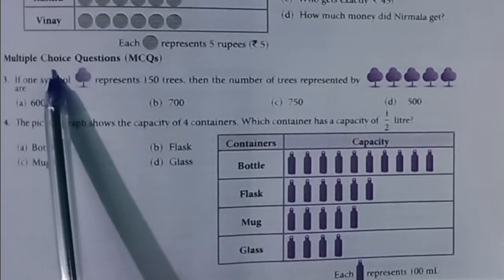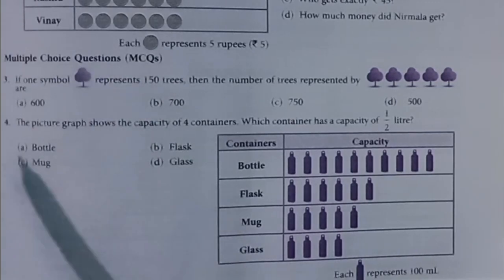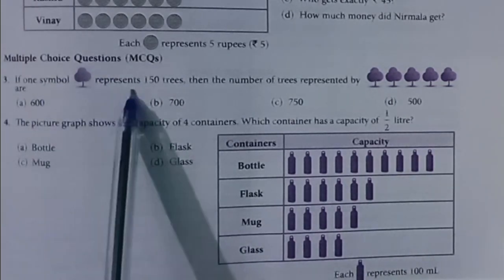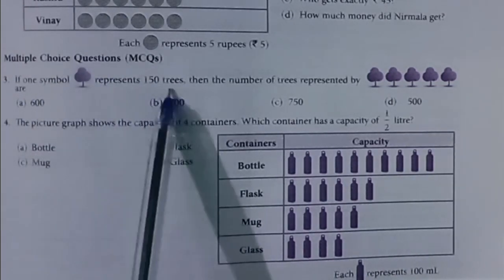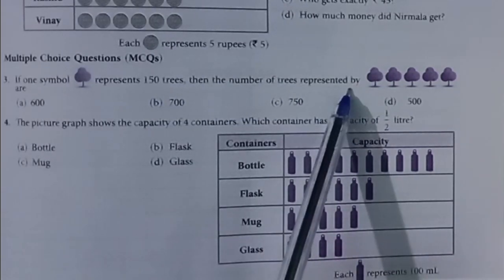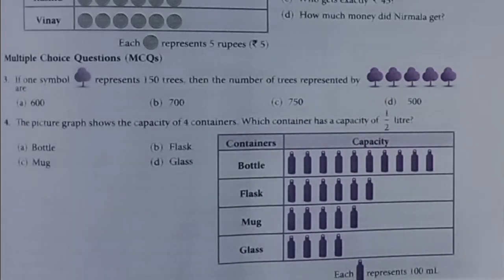Multiple choice question. Third question: If one symbol represents 150 trees, then the number of trees represented by five symbols. The answer is C, which is 750.